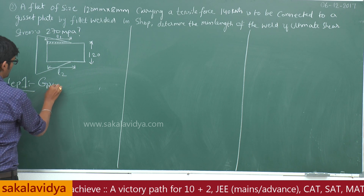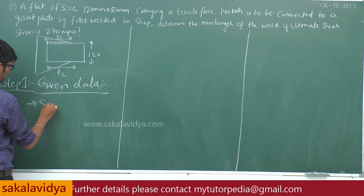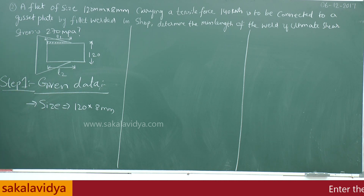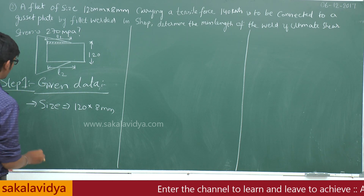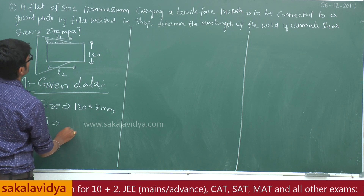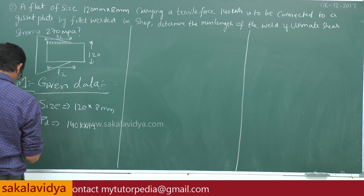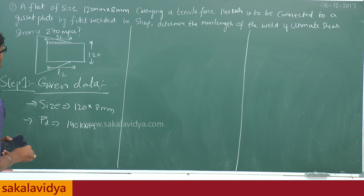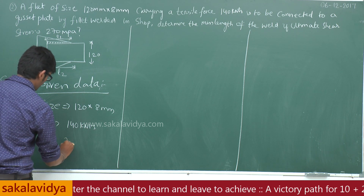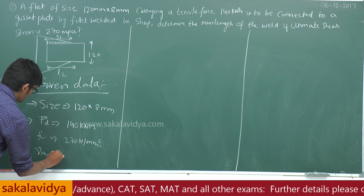Step 1: Given data. Size of the plate is 120 x 8 mm. The tensile force Td is equal to 140 kN. Ultimate shear stress FU is equal to 270 N per mm square, and the partial safety factor gamma M0 is equal to 1.25.